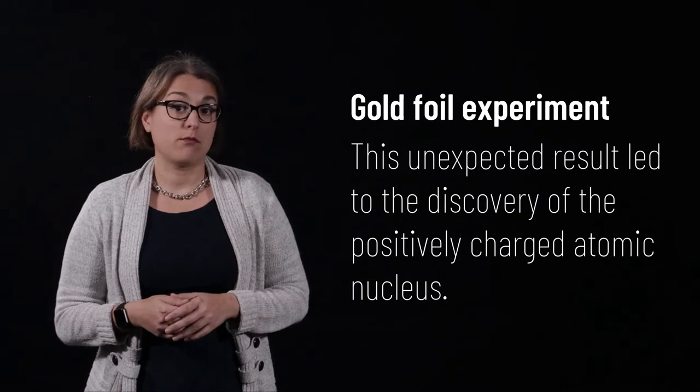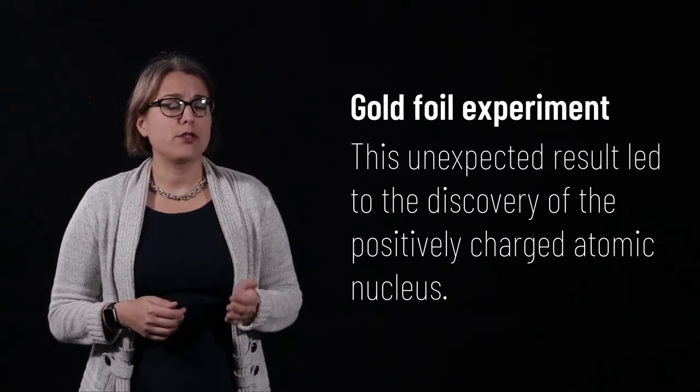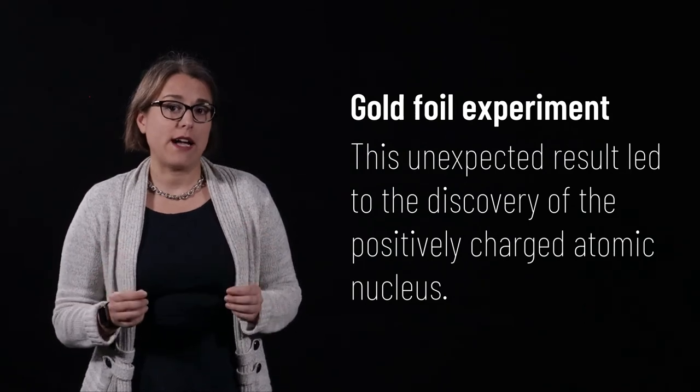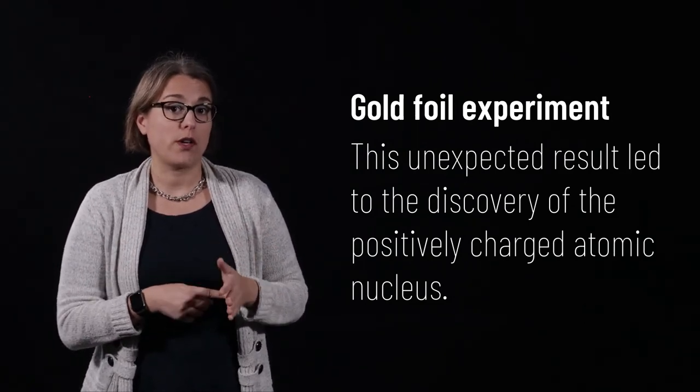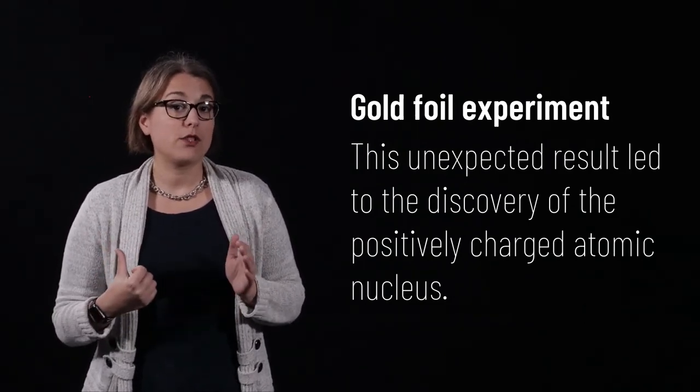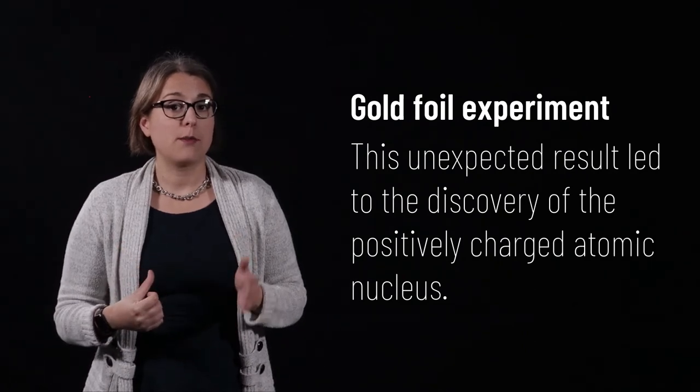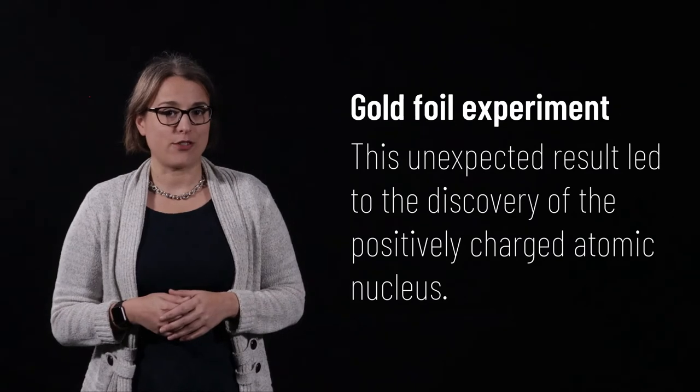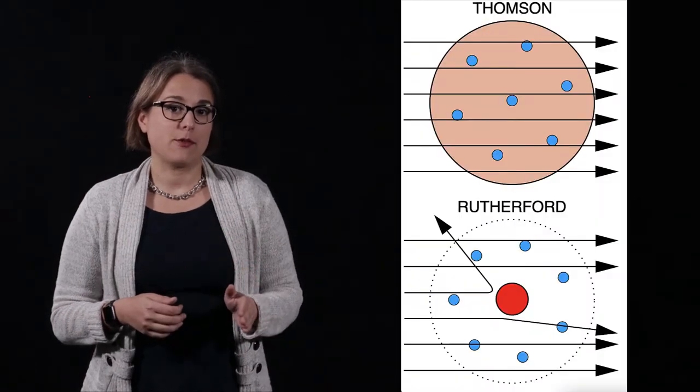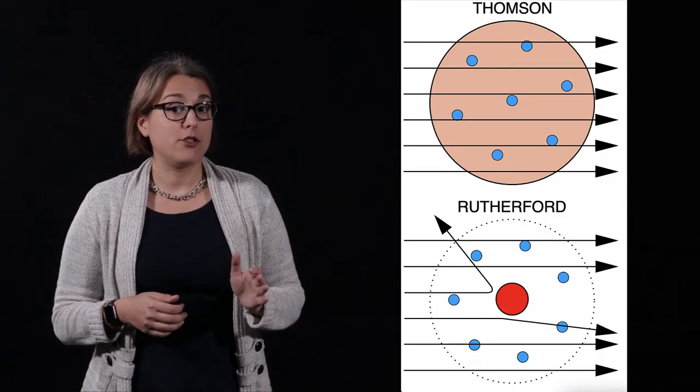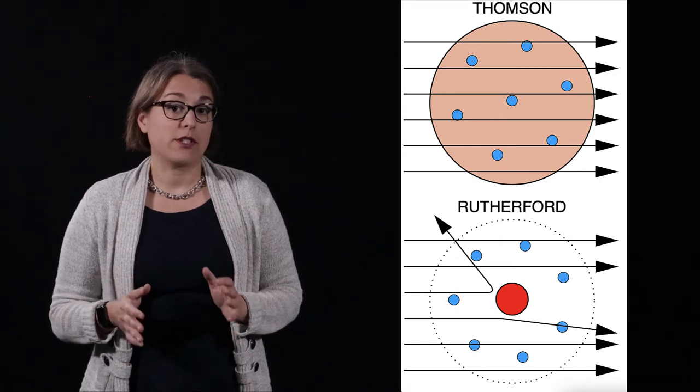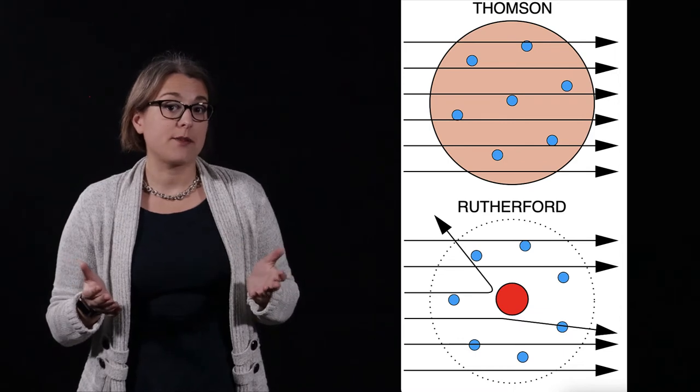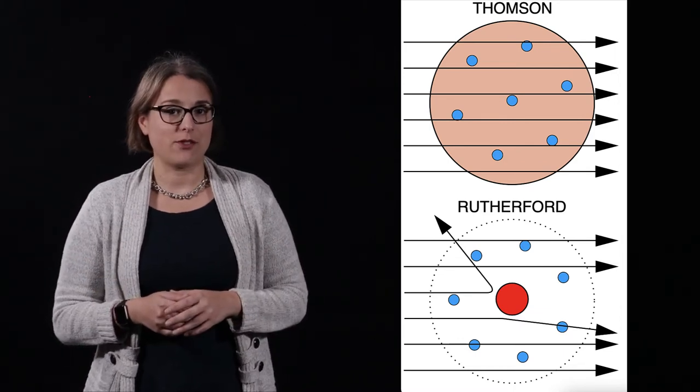Alpha particles, we know now, are composed of two protons and two neutrons. When they came to interact with the nuclei in the gold foil, they bounced back due to the force of electrical repulsion between the protons in the gold nucleus and the protons in the alpha particles. This experiment led to the discovery of the atomic nucleus. Now, our atomic model shows a positively charged nucleus surrounded by mostly empty space in which electrons move around.